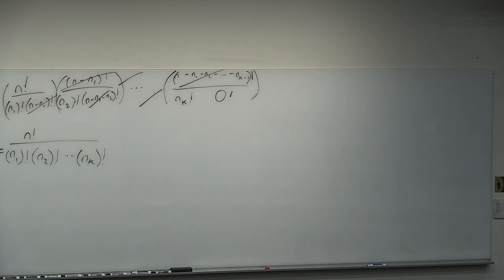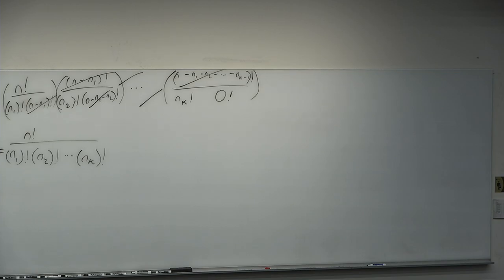So if you have several kinds of items that can be told apart from each other and you want to permute them, this is the formula to apply. Questions on this? It's basically just a generalization of what we did for the word 'success.' Let's get on to the next thing, and then we'll do some problems.